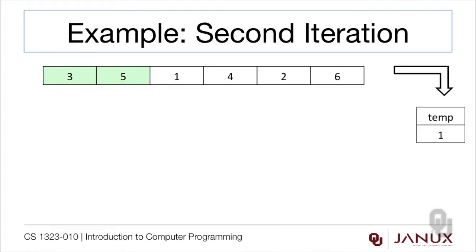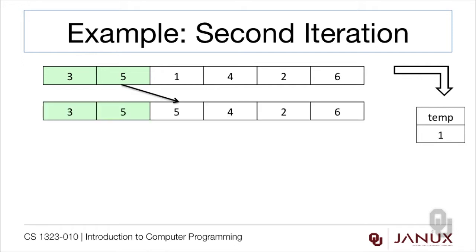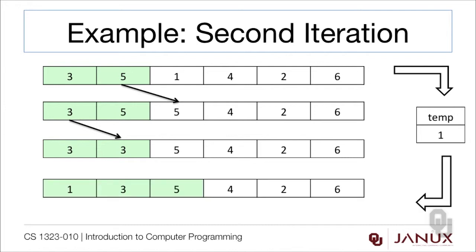Here's the second iteration. Now 1 is the value that we're trying to put in with respect to the others, so 1 gets moved to the temporary location. Now 1 is smaller than 5, so 5 gets moved over into 1's position. 1 is also smaller than 3, so 3 gets moved over, and then at the end we move the value from temp into the first position.